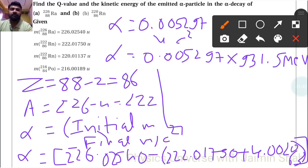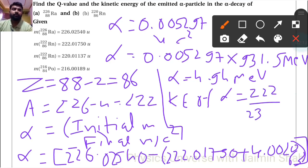The alpha decay energy is 4.94 MeV. Now for kinetic energy of the alpha particle, we calculate 222 divided by 226 times 4.94, which gives 4.85 MeV.